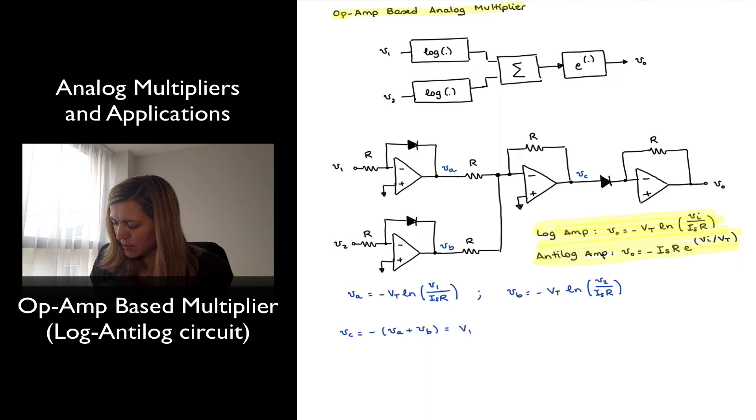And so I will have that vC is equal to negative vA plus vB, or vT natural log of v1 over iS times r, plus vT times the natural log of v2 over iS times r.